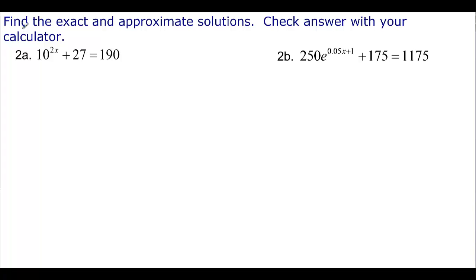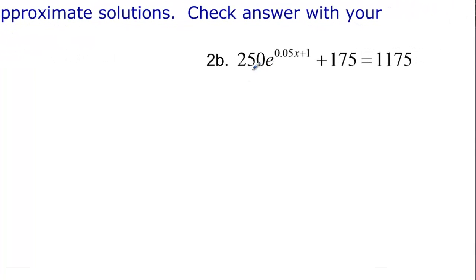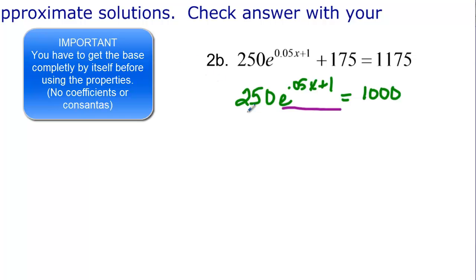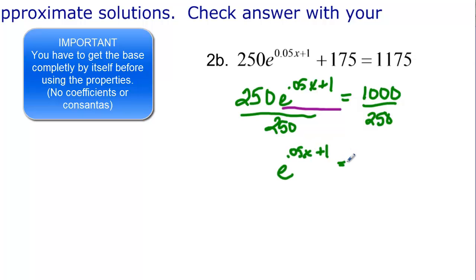For the next problem, we subtract 175, giving e to the 0.05x plus 1 equals 1000. We need the base completely by itself before using our properties, so we divide by 250, giving e to the 0.05x plus 1 equals 4.